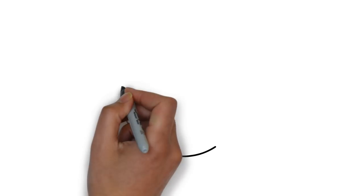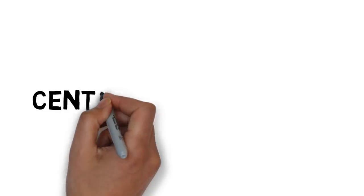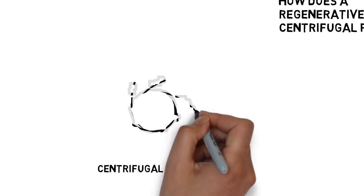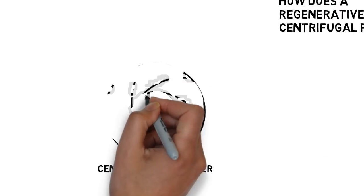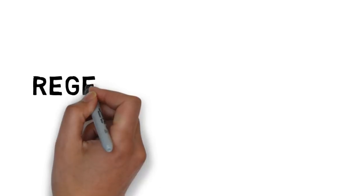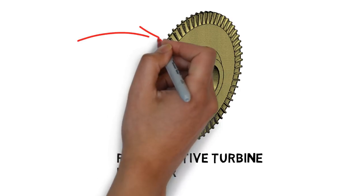The main difference between a regenerative turbine pump and a centrifugal pump is in the impeller. A standard centrifugal impeller has curved veins that extend from the center to the edge of the impeller. The regenerative turbine impeller has rows of veins on each side of the impeller's rim.